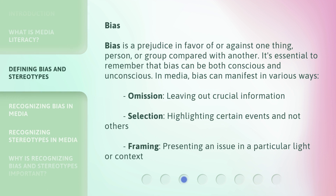Bias. Bias is a prejudice in favor of or against one thing, person, or group compared with another. It's essential to remember that bias can be both conscious and unconscious. In media, bias can manifest in various ways.